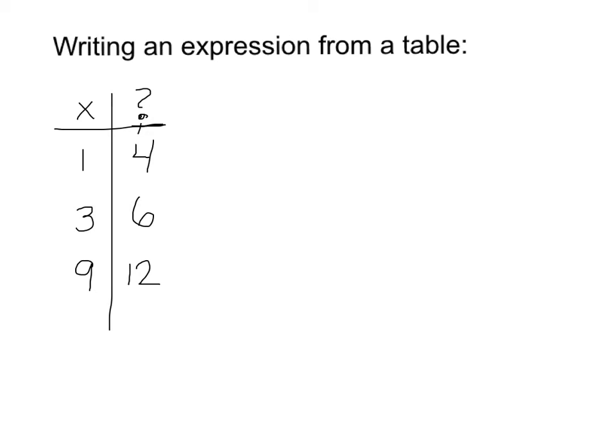So I'm always going to begin with the x value. But what's being done to the x value? One thing to check is, is anything being added? Well, 1 plus what would give me 4? 1 plus 3. Well, let's check. What happens when I add 3? They all hold true. So my expression would be x plus 3, which shows the relationship between x and what I have in the right-hand side.